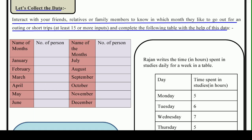You have to find out from your friends, relatives, or family members in which month they like to go out — whether for a short trip or an outing. You have to ask at least 15 people and complete this table. For example, let's see how we make a table in the copy with columns: 'Name of Month' and 'Number of Persons.'